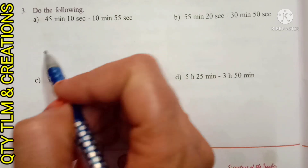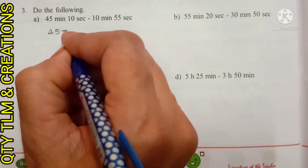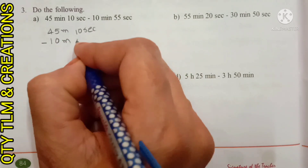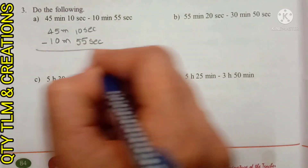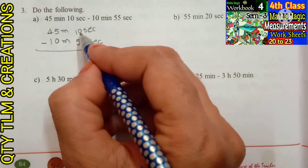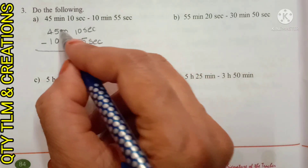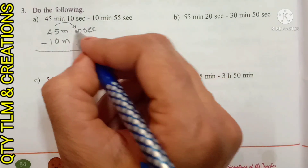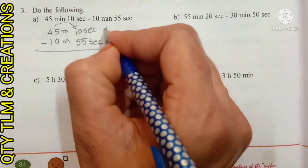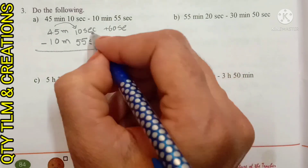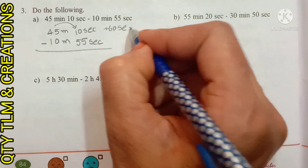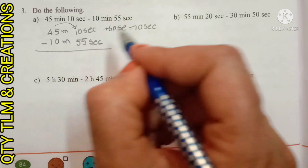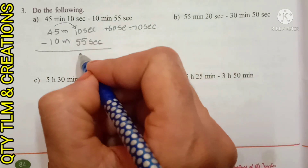Next question: do the following. A) 45 minutes 10 seconds minus 10 minutes 55 seconds. Here, 55 seconds can't be subtracted from 10 seconds, so borrow 1 minute from 45 minutes. Convert it as 60 seconds, and add 10 seconds plus 60 seconds — it becomes 70 seconds. Now subtract 55 seconds from 70 seconds, we will get 15 seconds.